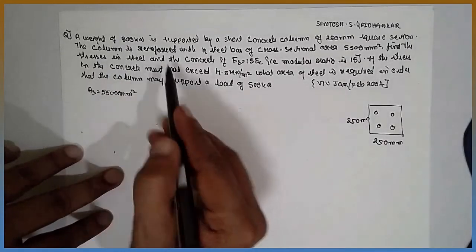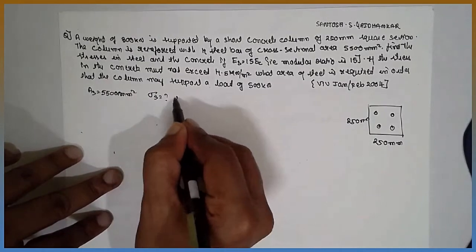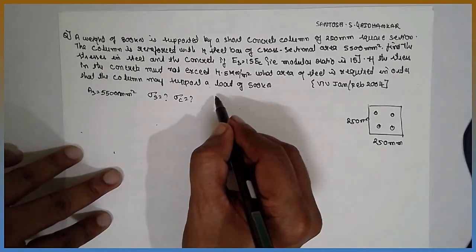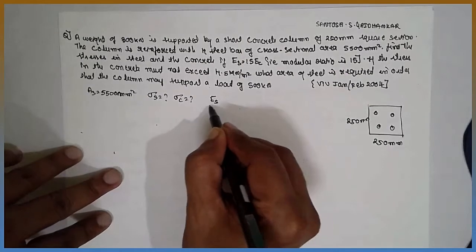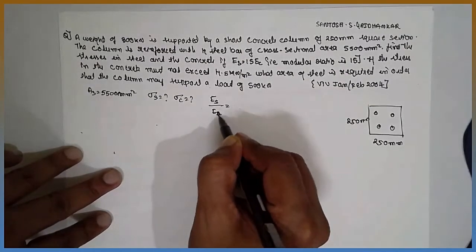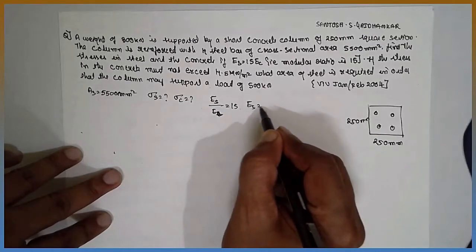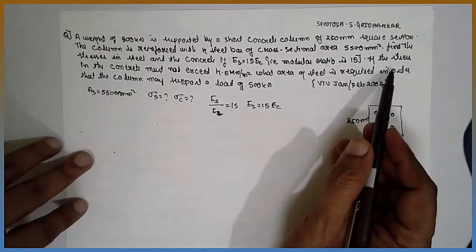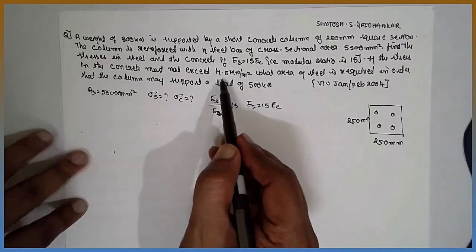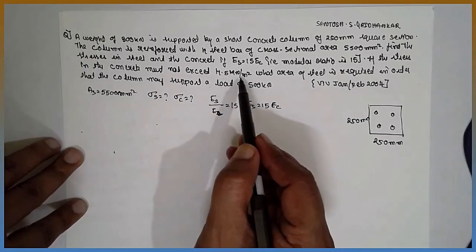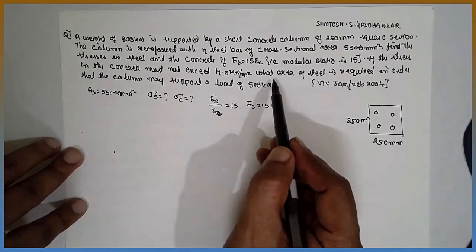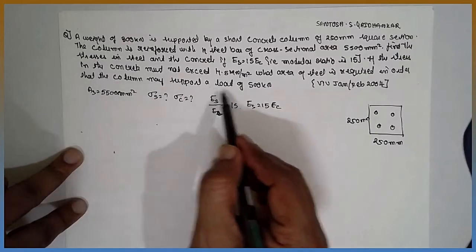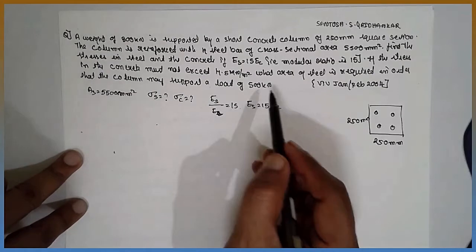Find the stresses induced in the steel and concrete. The modular ratio is given as ES divided by EC equals 15, or ES equals 15·EC. If the stress in the concrete must not exceed 4 MN/m², what area of steel is required so that the column may support a load of 500 kN?